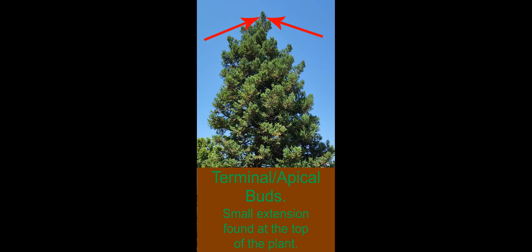Terminal or apical buds is a small extension found at the top of a plant. Terminal buds are always actively growing.